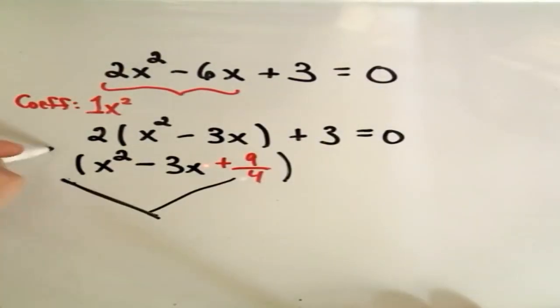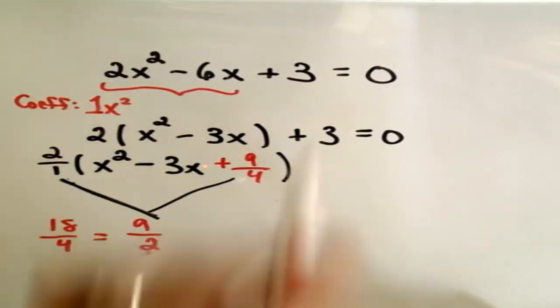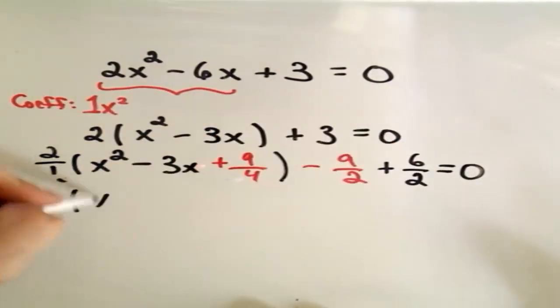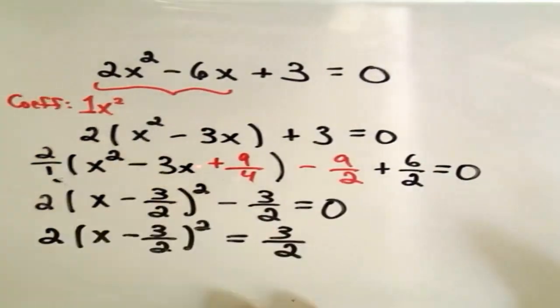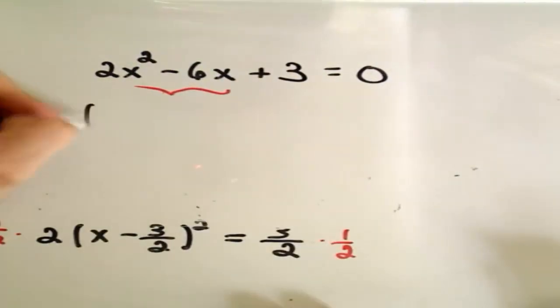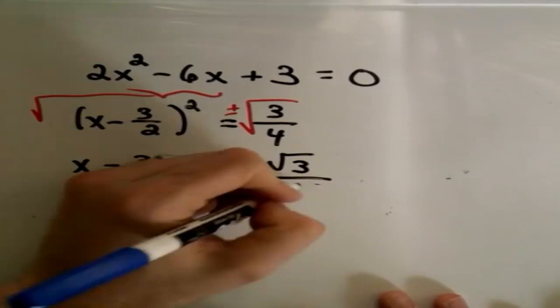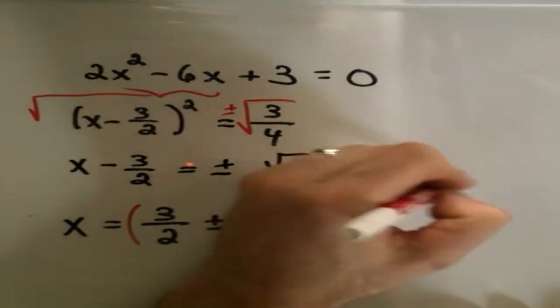And that's completing the square. You gotta divide by a, move c to the other side. Divide b by two, squared — add it to both sides. It's getting a perfect square. All you gotta do is simplify it. If all else fails, there's always one thing you can try.